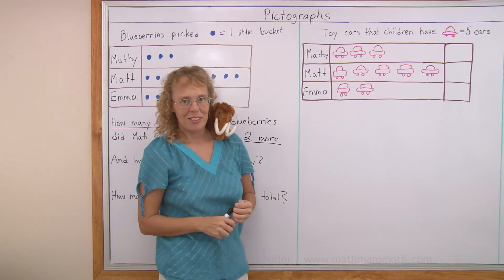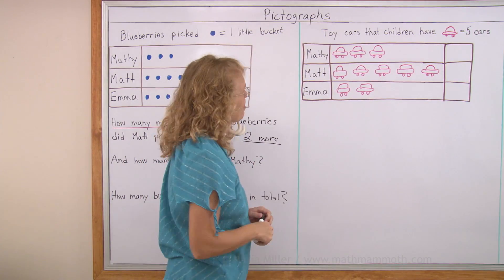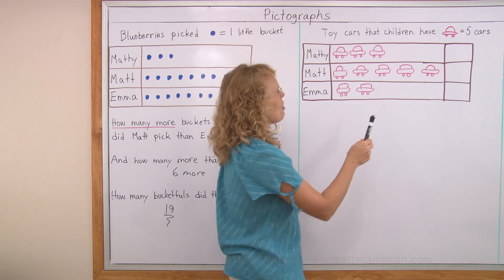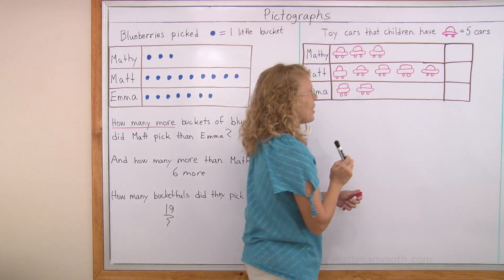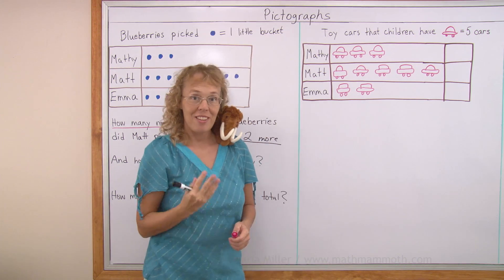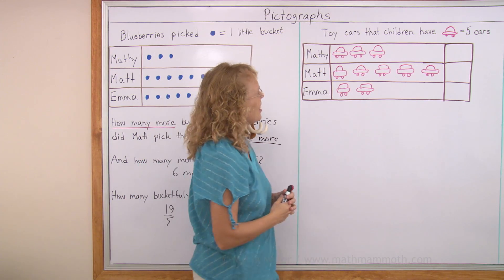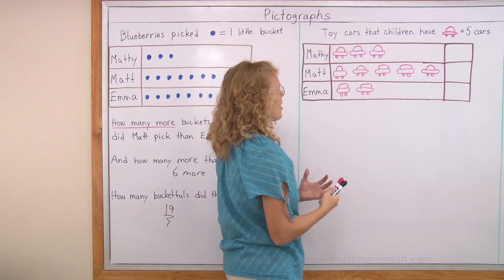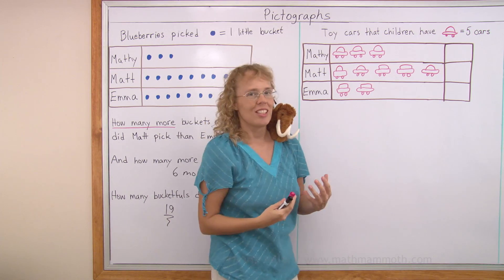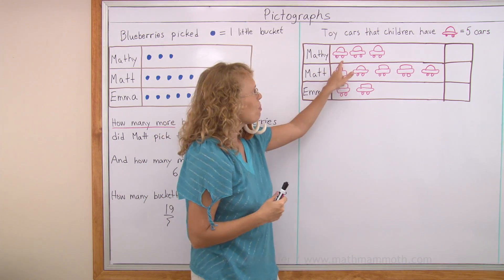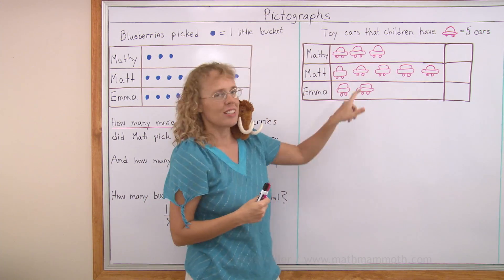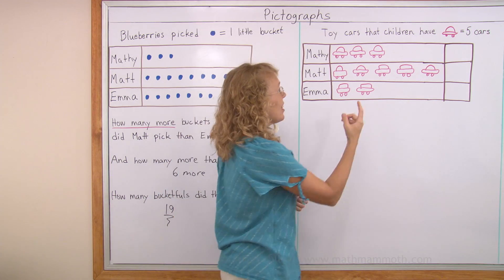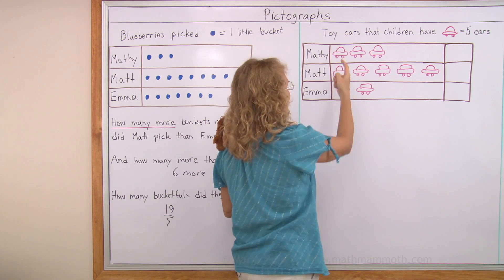Over here, another pictograph — toy cars that children have. This time, one toy car picture means five cars. Each picture means however many the pictograph says, and this time each picture means five cars.